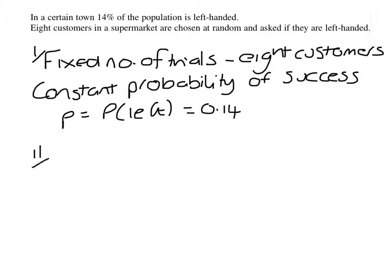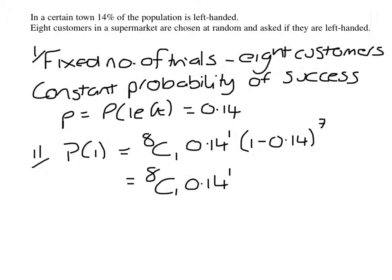Part 2: find the probability of 1. So that will be 8C1 times 0.14 to the power 1 times 1 minus 0.14 to the power 7. So that is 8C1 times 0.14 to the power 1 times 0.86 to the power 7, which gives an answer of 0.390, and that answer has been given to 3 significant figures.